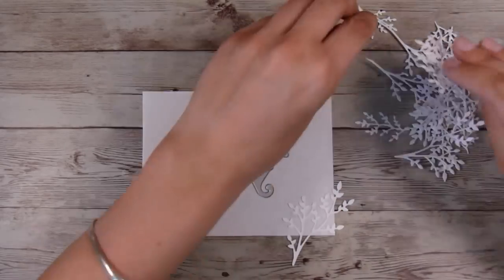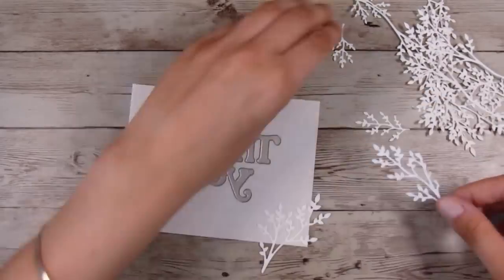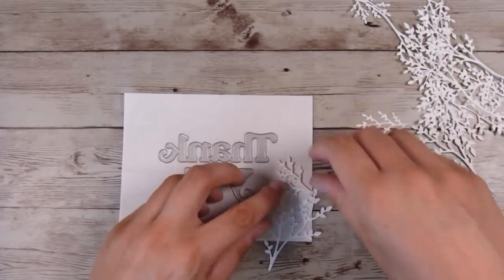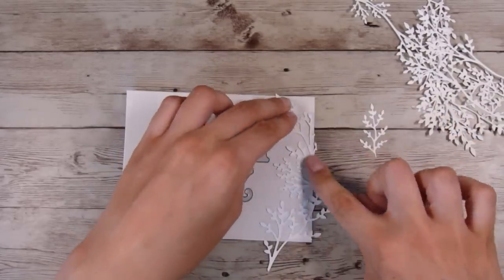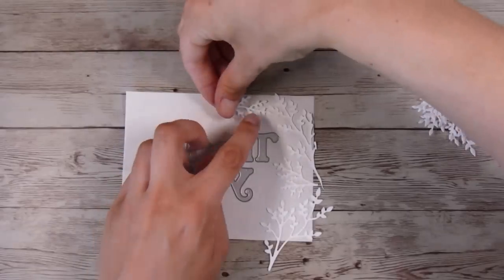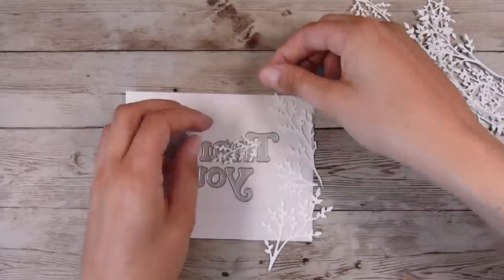It's basically just a low-tack paper and I'm sure many low-tack papers would work. Then I'm going to pop my die cuts down, making sure that they have the nice die cut side facing down onto the masking paper.